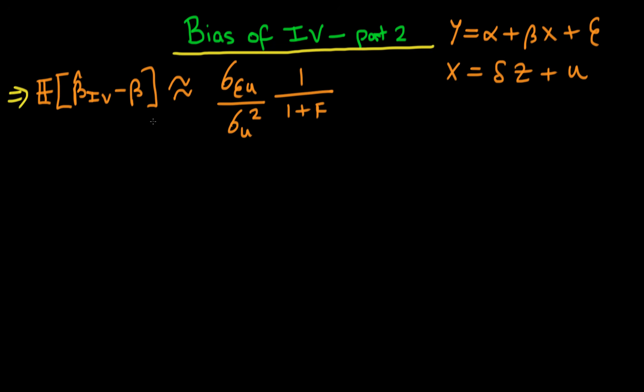If our first stage regression, which has this delta in it—if delta equals 0—then our first stage regression essentially has an F statistic which is equal to 0.